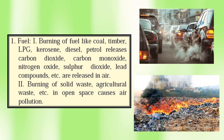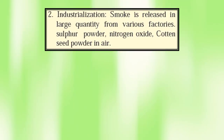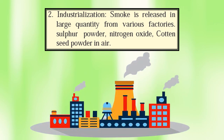Number two, burning of solid waste and agricultural waste in open spaces also causes air pollution. We are the ones using cars and burning solid waste in open spaces, which leads to air pollution. Number three, industrialization — smoke is released in large quantities from various factories, including sulfur powder, nitrogen oxide, and cotton seed powder. Substances in gaseous or liquid form come out from industries, leading to multiple types of pollution.